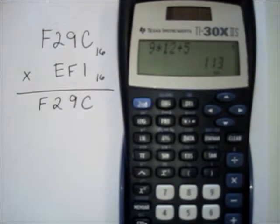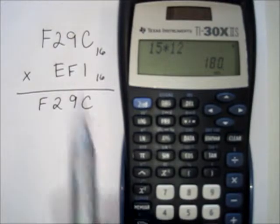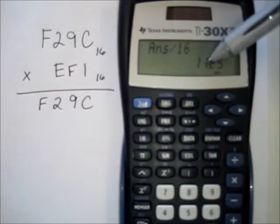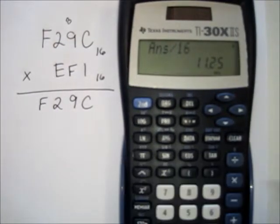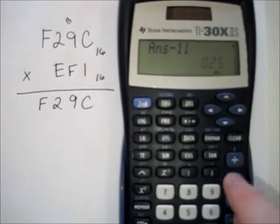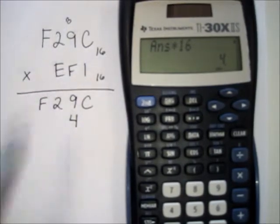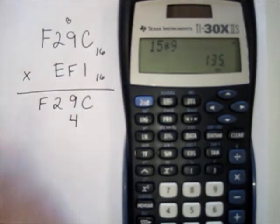We'll need the calculator: F times C, and F is 15, C is 12. So 15 times 12 is 180. In base sixteen, divide by 16 to get 11.25 — eleven is the letter B, so we're carrying B. Subtract the 11 and multiply by 16 to get the remainder of four. So F times C is B-four.